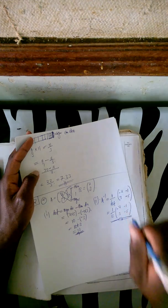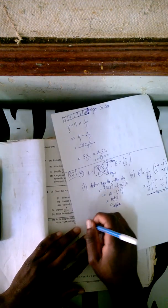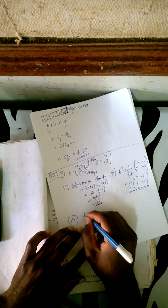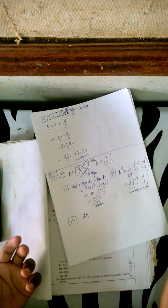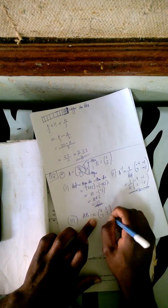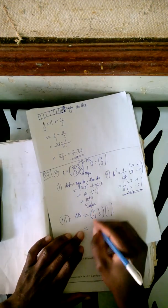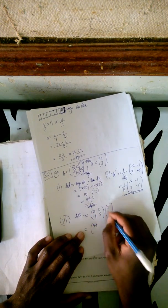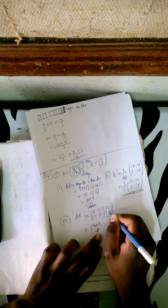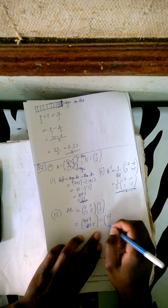Question 2c: find the value of AB, which is the product of A times B. A is [2, -1; 3, 5] and B is [2; 3]. Multiplying row by column: 2 times 2 is 4, plus 3 times 3 is 9, giving 13. Then negative 1 times 2 is negative 2, plus 5 times 3 is 15, giving 13. So AB equals [13; 13]. This is your answer.